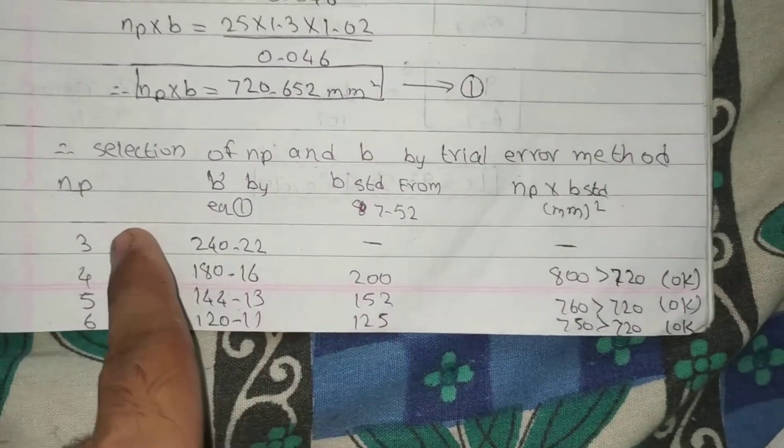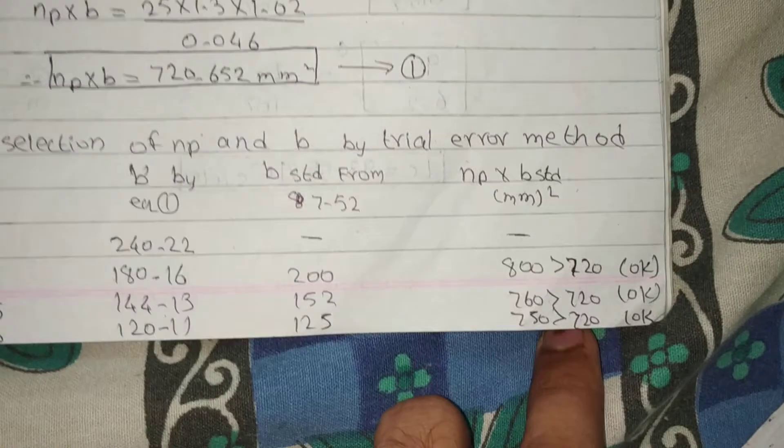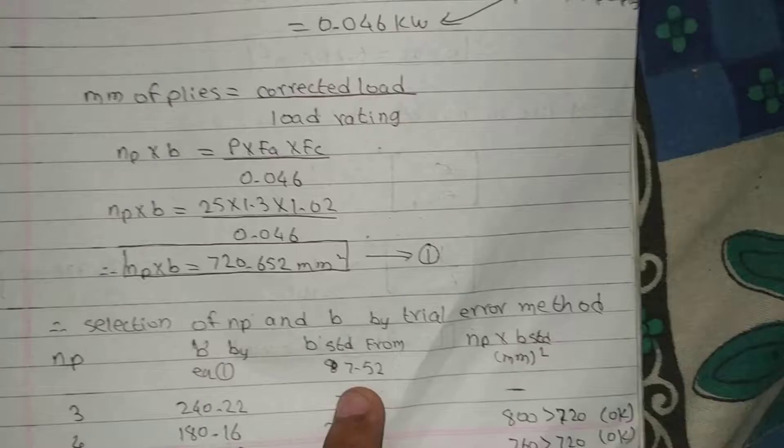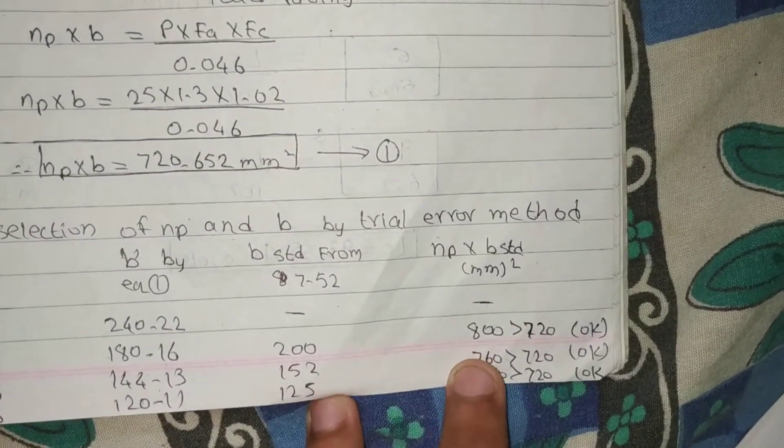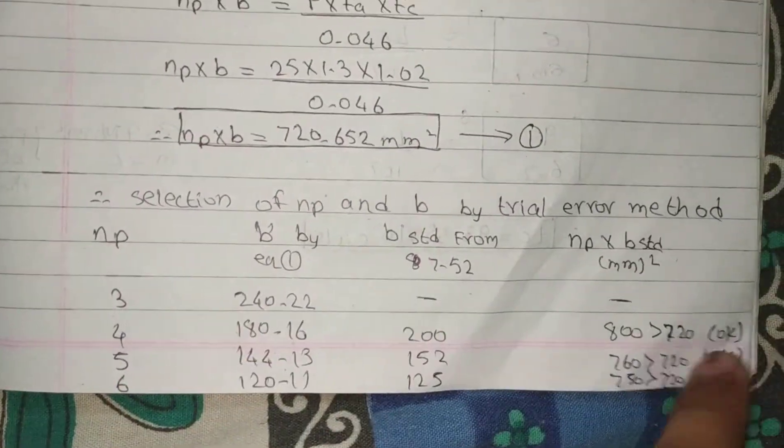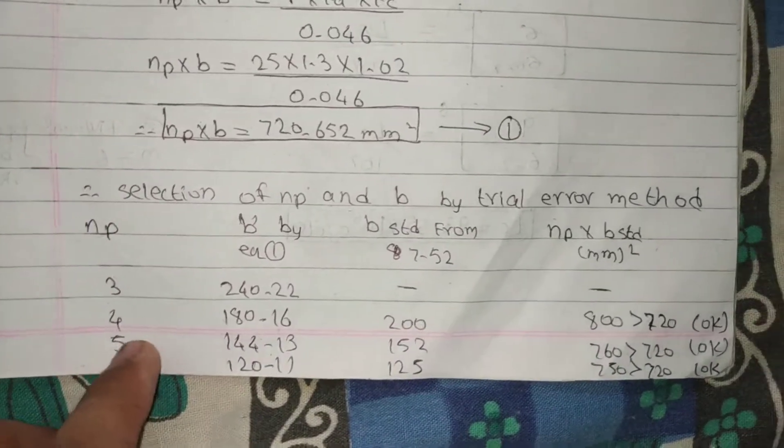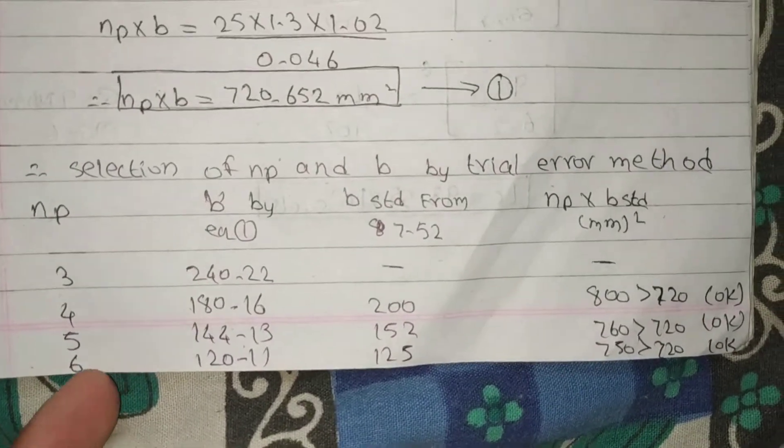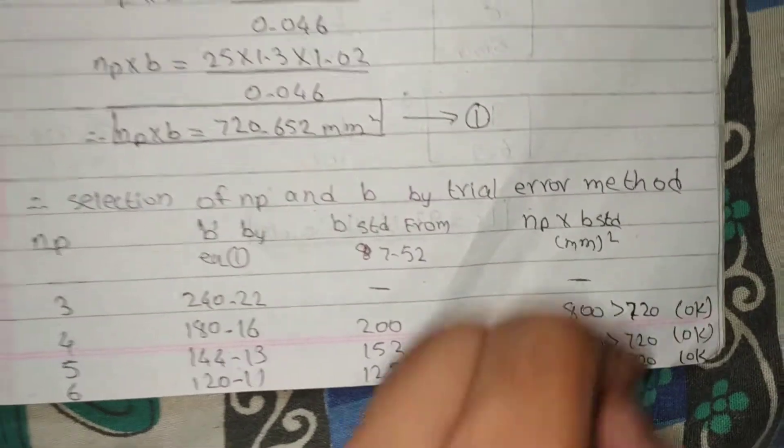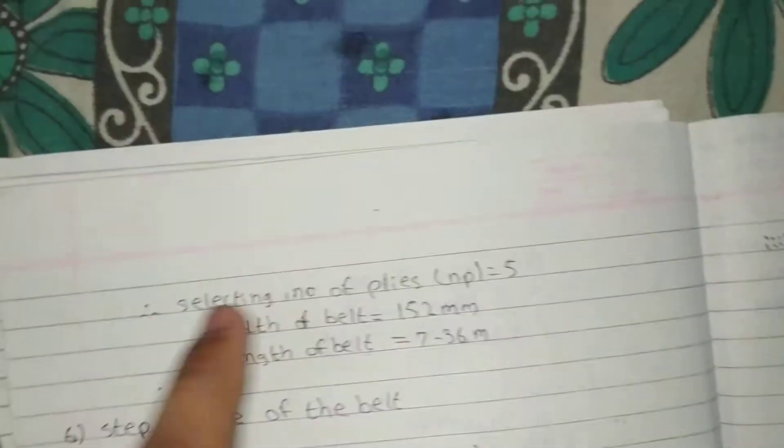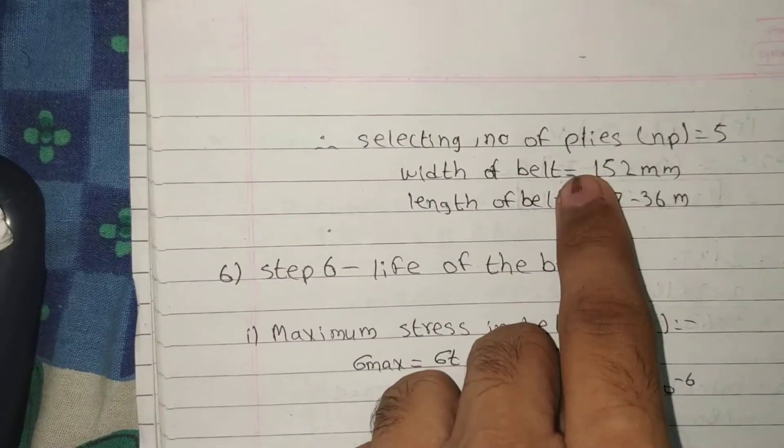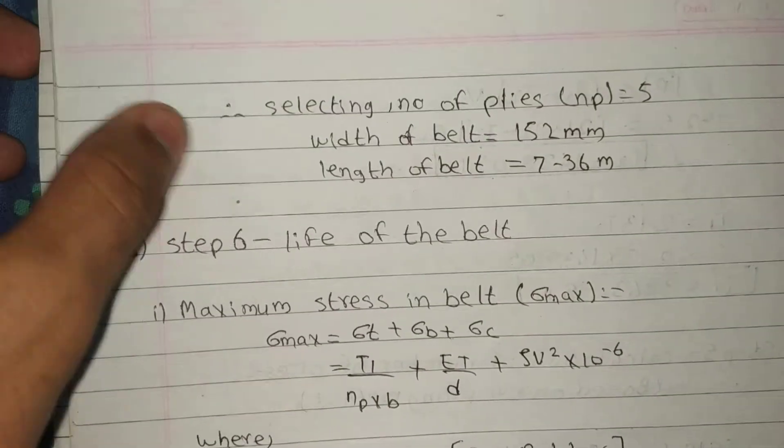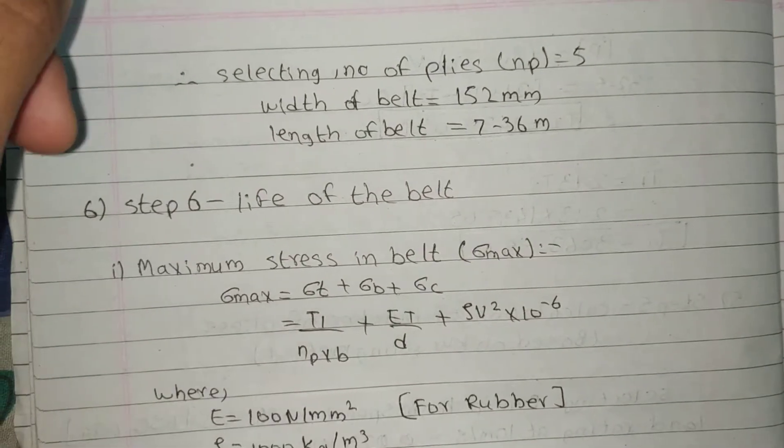We take NP into B standard. For 5, it is 760. We can take it to 6, or we can take 3-4-5. For 6, we can take 750. Then we take our number of plies here. Number of plies will be 6. Then the belt will be 6. If you have used 3-4-5, then 5 will be small.